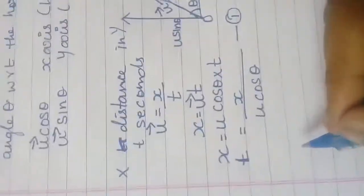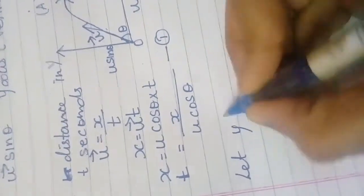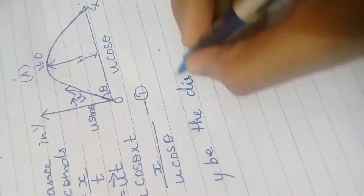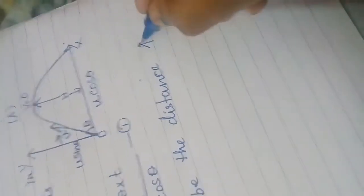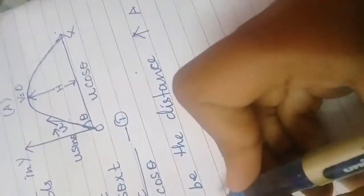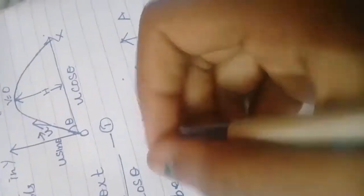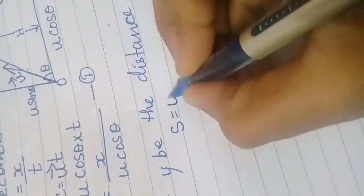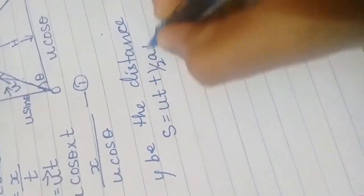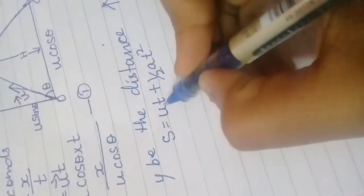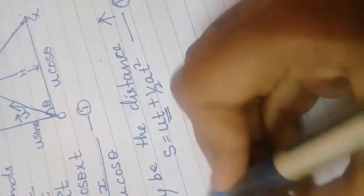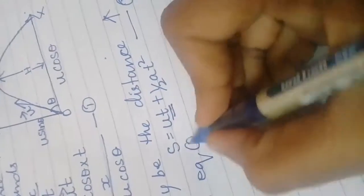Now let y be the vertical distance travelled by the object A. We will use the formula S equals Ut plus half A t squared. In this formula we are going to substitute t. This formula is equation number 2. We will substitute equation number 1 into equation number 2.